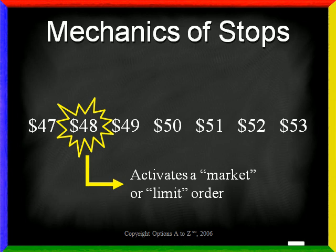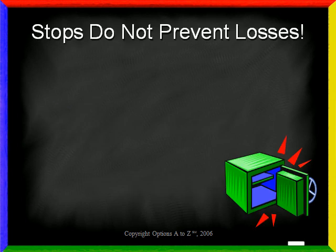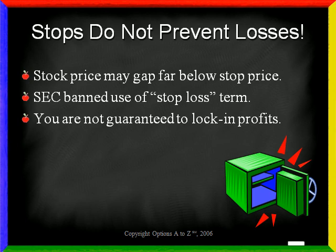It's very important to understand that the stop price you select is nothing more than an activation point — it is not necessarily the price you will receive if your order executes. Think of the stop price as a light switch that is either on or off. If the stock price remains above your stop then nothing is done, but if the stock trades at or below your stop price the switch is activated and the computer submits an order to sell. Because the stop price is nothing more than an activation point, stops do not necessarily prevent losses. The stock price may gap far below your stop price, and it is for this reason that the SEC banned the use of the term "stop loss" by professionals. Just be aware that stop orders are tools and have limitations — you are not guaranteed to lock in profits just because you are using stops.